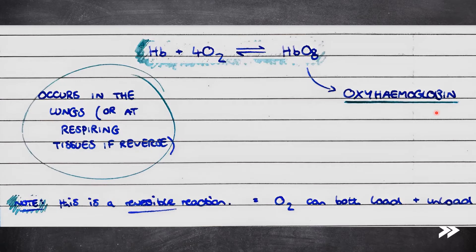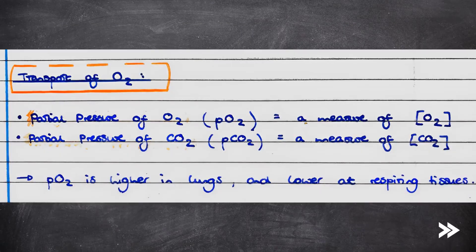Note that this is a reversible reaction, so the equation can go both ways. The binding of oxygen to haemoglobin is known as loading, and the unbinding is known as unloading. The forward reaction — loading of oxygen — occurs in the lungs, and the backward reaction — unloading of oxygen — occurs at the respiring tissues.